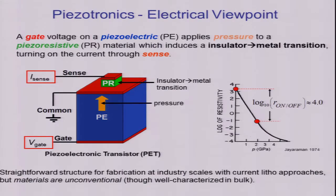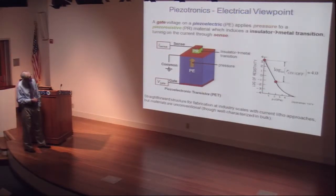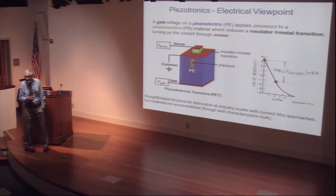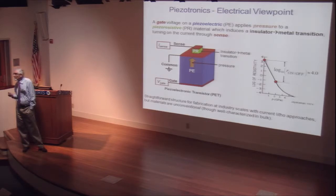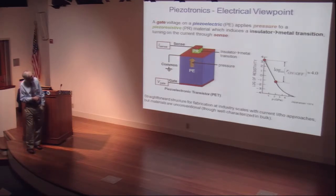This piezoelectric actuator then expands and applies pressure to this piezo resistor. The piezo resistor is a special material which, under pressure, undergoes insulator to metal transition. At that point, it starts to conduct, turning on the current between this output channel sense to common.